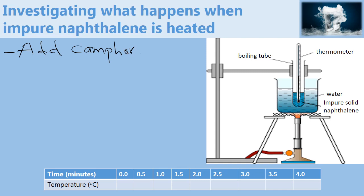the curve obtained will be a little different because the camphor is an impurity and it interferes with the melting and boiling points of substances.